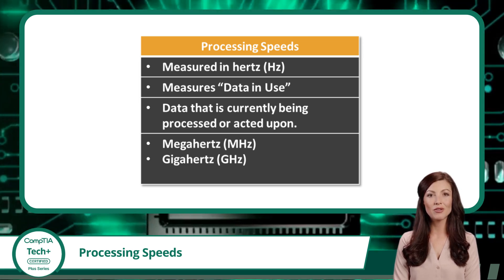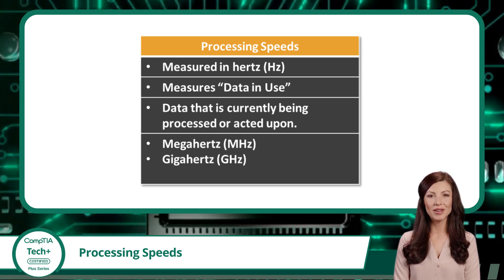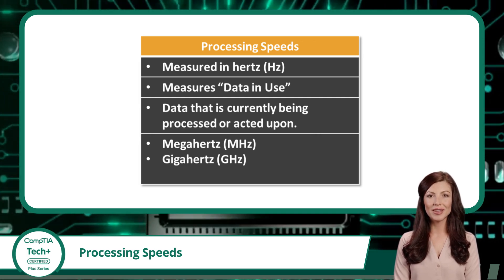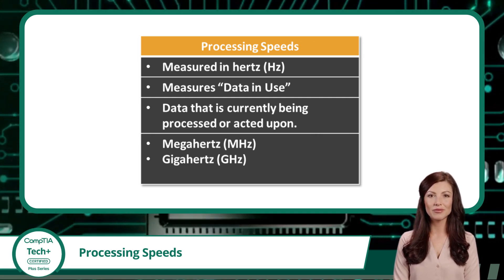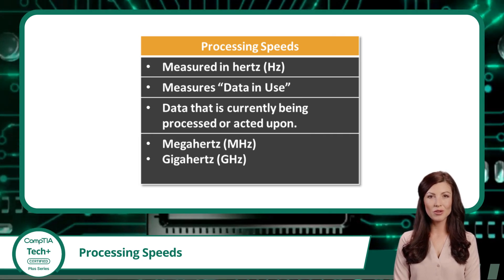These prefixes are essential when describing how fast a processor can execute instructions or how frequently a signal is repeated in a system. So while one hertz is technically one cycle per second, in the world of technology, we almost always see measurements like 1.8 gigahertz, 3.2 gigahertz,